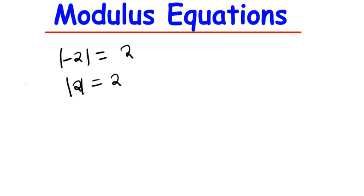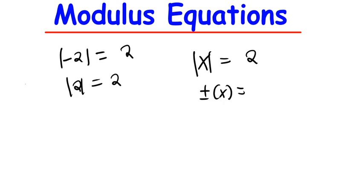If I have got x, and the Modulus of x equals 2, I really don't know whether x is negative or positive. Because even if it's negative, it's going to give me positive. Even if it's positive, it's going to give me positive. Therefore, to remove the Modulus, I'm going to say this is plus or minus x. So x can either be positive or negative, but still it's going to give me positive — equal to 2. That means x is equal to 2 and x can be equal to negative 2.